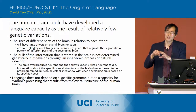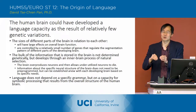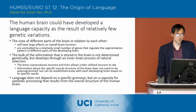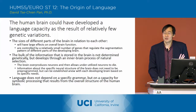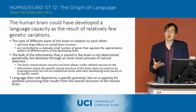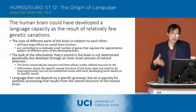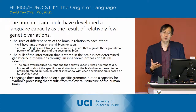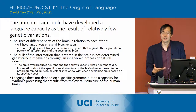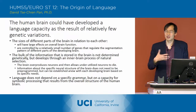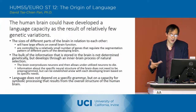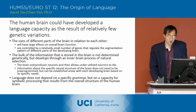He goes through an elaborate discussion of brain anatomy and how there are very few genes able to control the relative size of different parts of the brain. The other point he makes is that the bulk of the information stored in the brain is not determined genetically, but develops through an inner brain process of natural selection that doesn't require much genetic pre-programming, allowing the internal structure of the brain to develop on the fly as the organism develops.